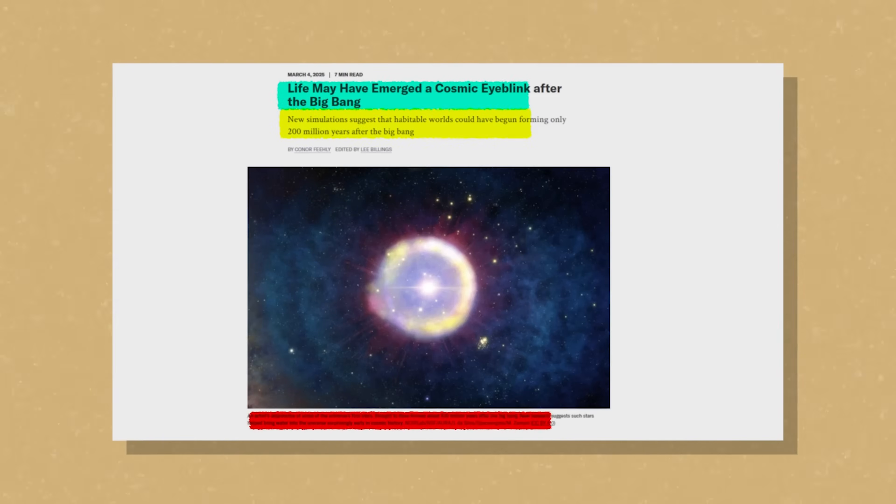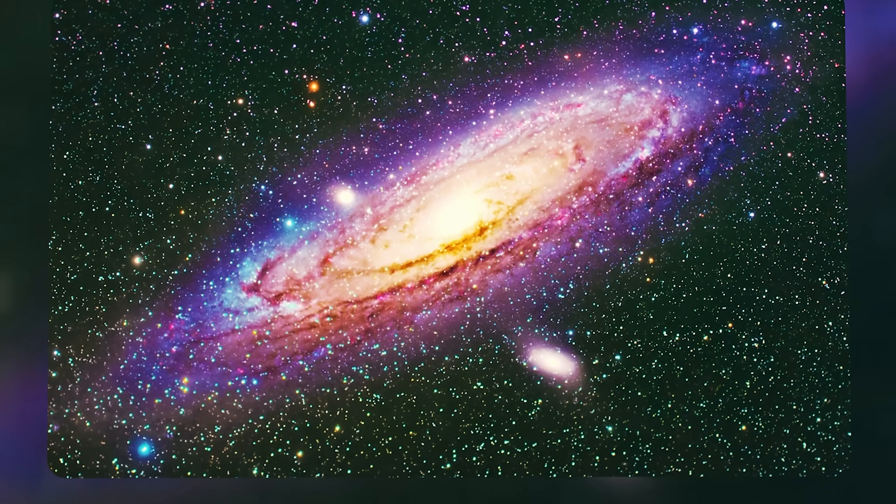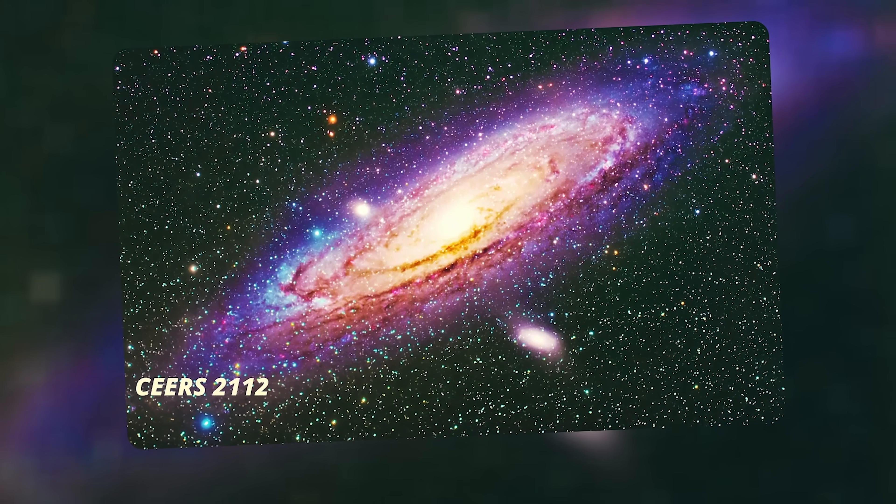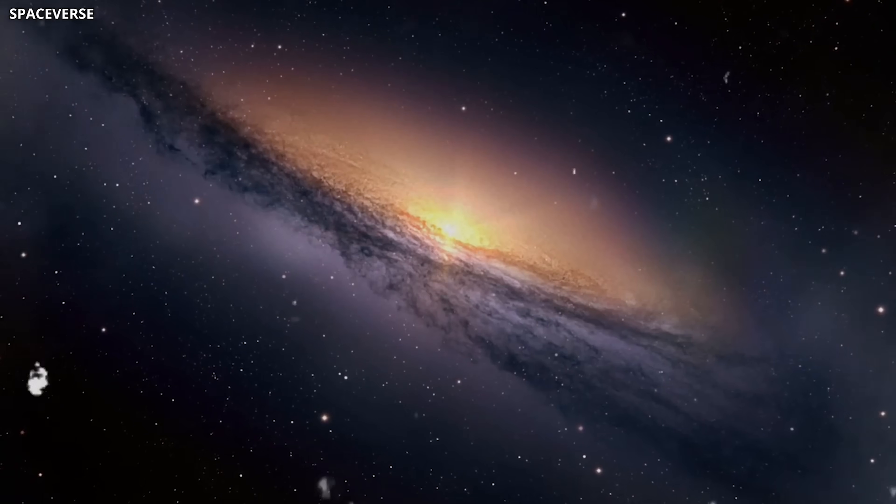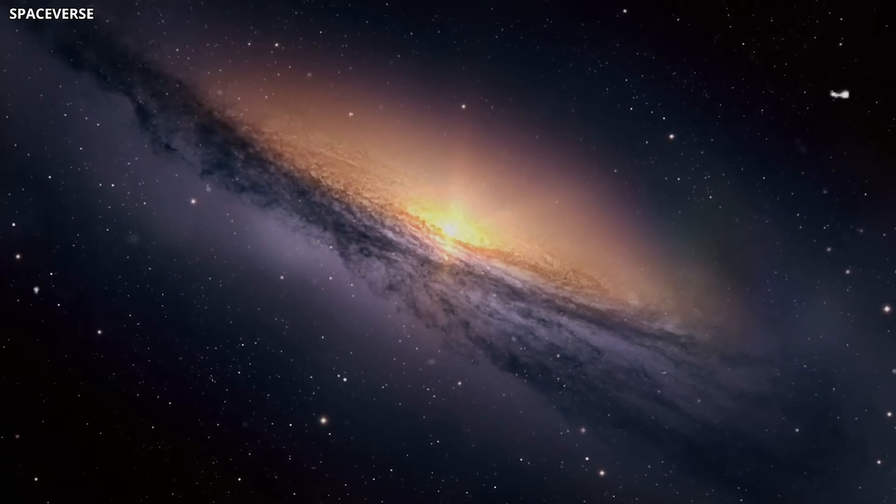These shimmering, gas-rich galaxies defined the universe around 2 billion years after the Big Bang. Among them, one galaxy stood out, Sirius 2112, a spiral galaxy strikingly similar to our Milky Way.